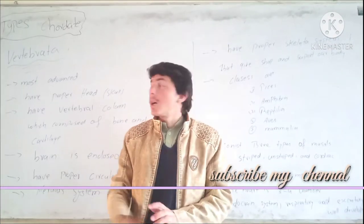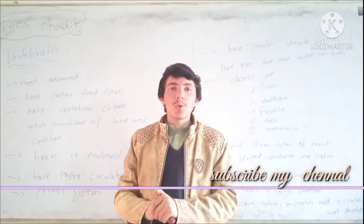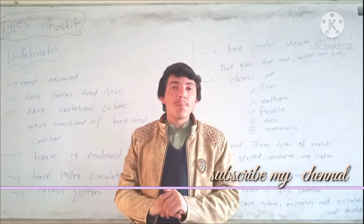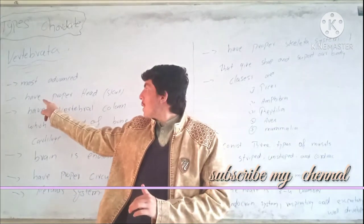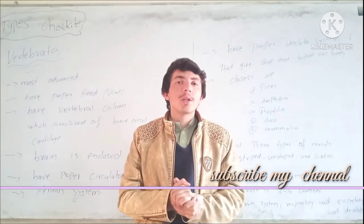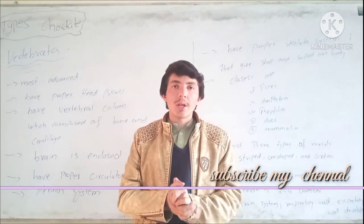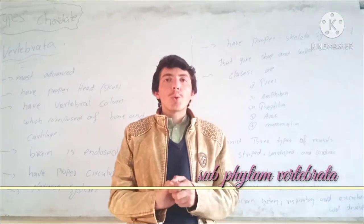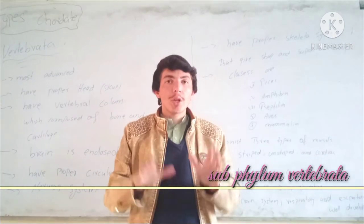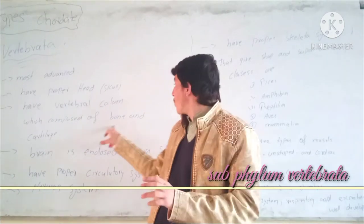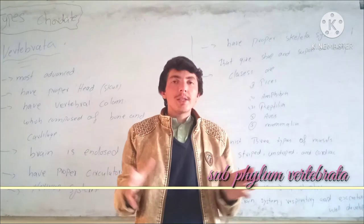The last type of chordate is Vertebrata. Vertebrata is the most advanced type of chordate. Most advanced — the Uro-coordinator is less advanced, Cephalo-coordinator is not the head. Our coordinator is called Vertebrata. It has a proper head, present, and a proper vertebral column which is composed of vertebrae.